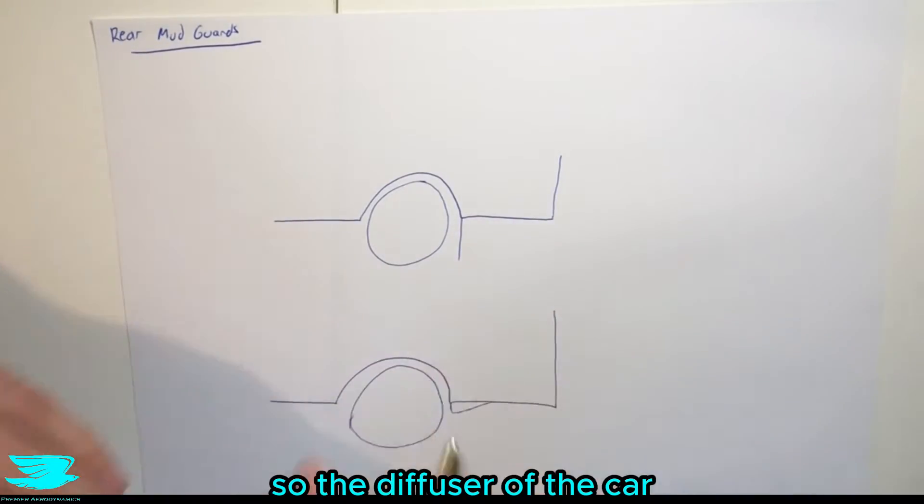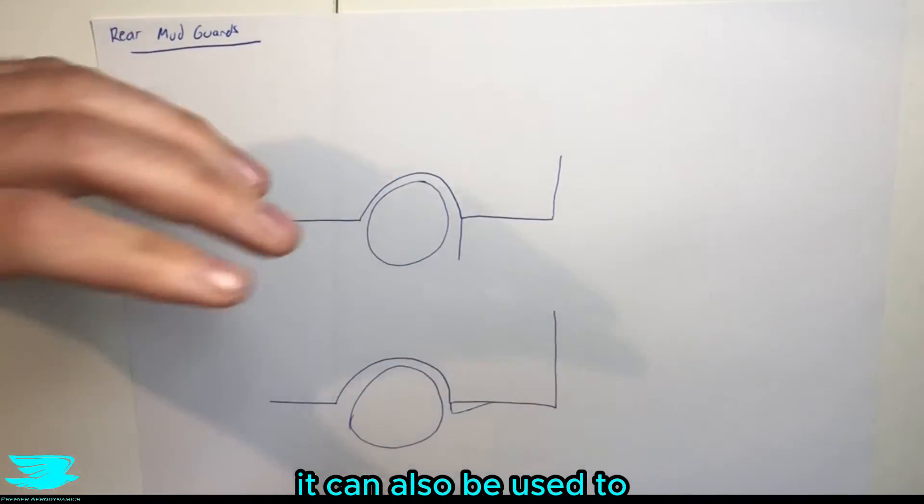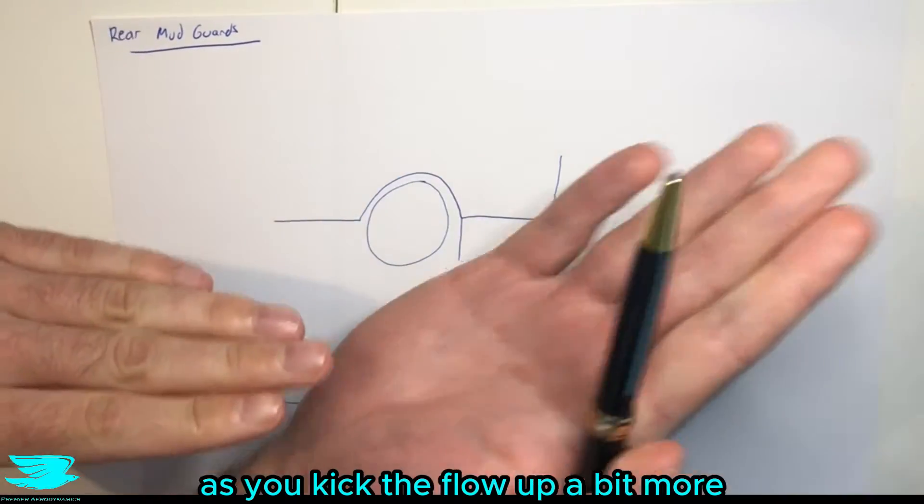So the diffuser of the car is often used to reduce the wake size and hence reduce the drag. It can also be used to increase the downforce as you kick the floor up a bit more.